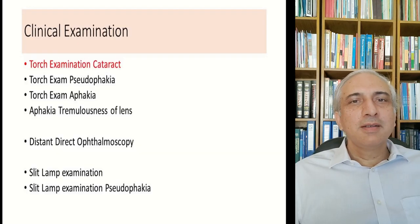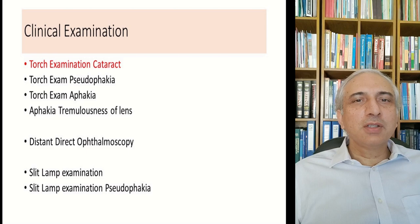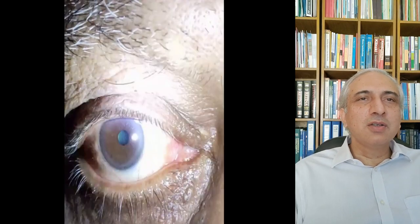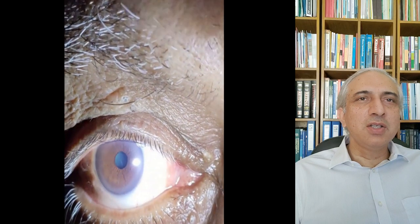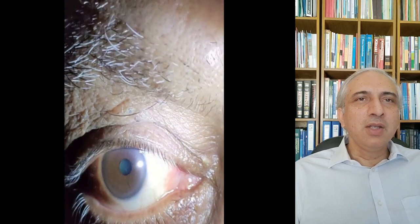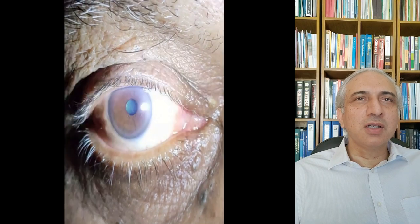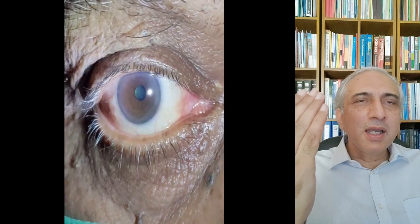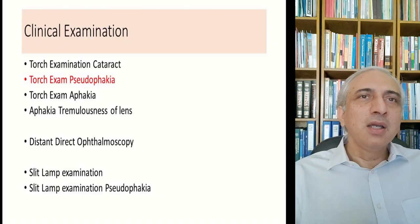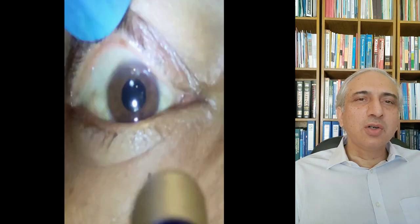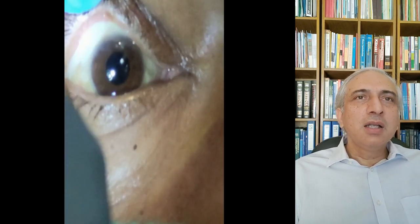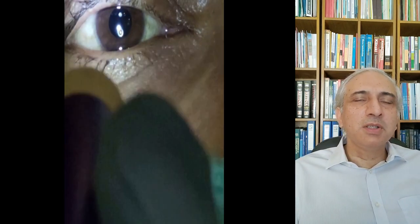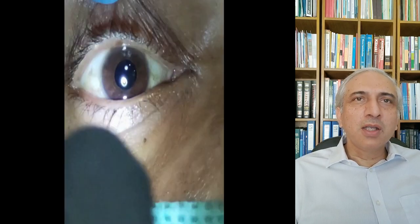On torch examination, a nuclear sclerotic cataract shows a greenish tinge in the pupil. Shine the light from the side and from the front for an oblique examination. In pseudophakia, you see double light reflexes — the Purkinje images — formed from the corneal surface and the back surface of the intraocular lens, with a jet-black pupil reflex and two shadows.